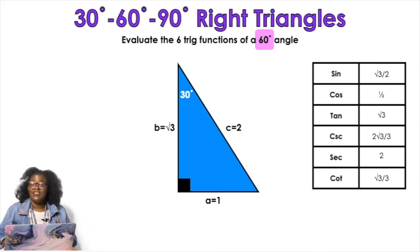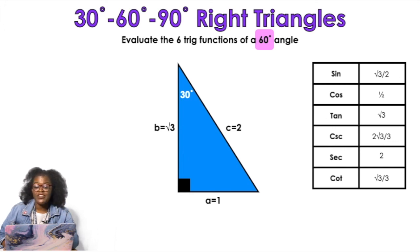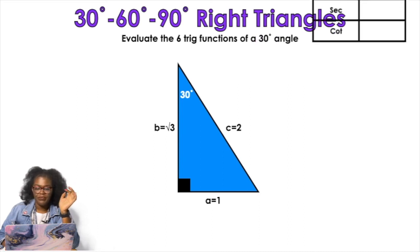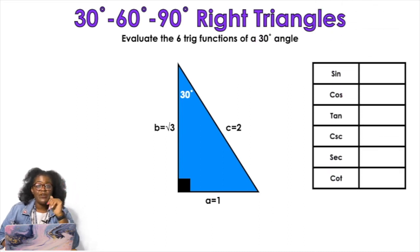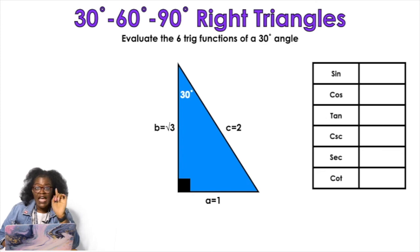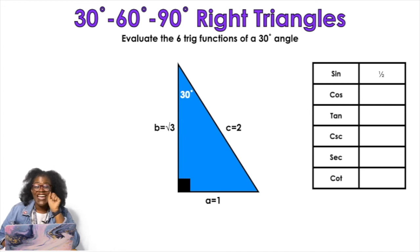Those are the trig values for the 60-degree angle. Now let's do the 30-degree angle — pay attention because these values are basically just rearranged. We're now looking at the top angle that says 30 degrees. Sine: opposite over hypotenuse — opposite the 30-degree angle is 1, hypotenuse is 2, so sine of 30° equals 1/2. Cosine: adjacent over hypotenuse — adjacent is root 3, hypotenuse is 2, so cosine equals root 3 over 2.